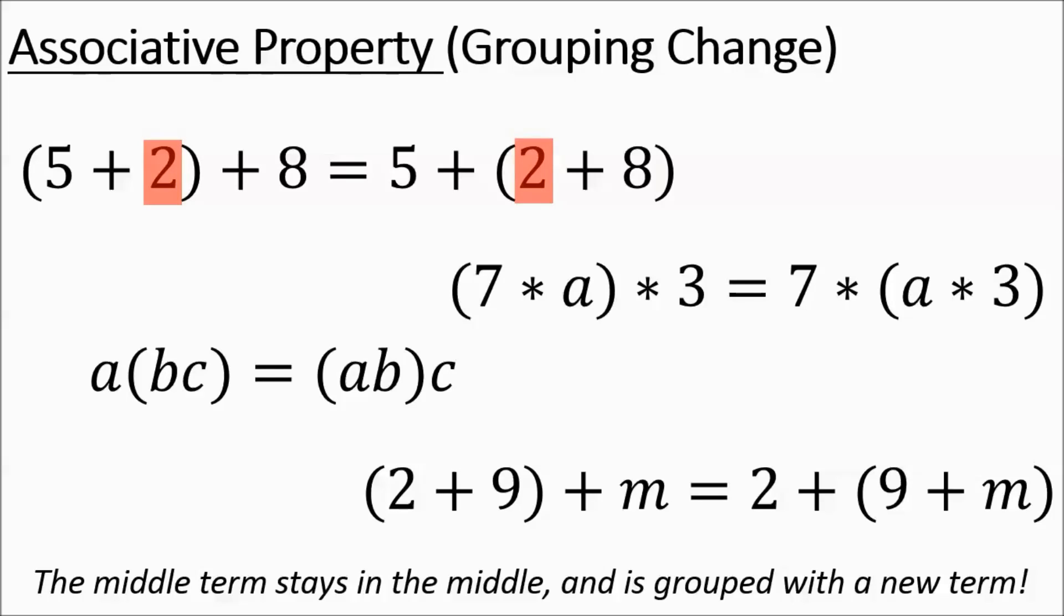So you had your 2 in the middle on both sides of the equation sign. The A was in the middle. The B was in the middle. The 9 was in the middle. The same middle term stays in the middle and then it's grouped with a different guy either to the left or to the right of that term.